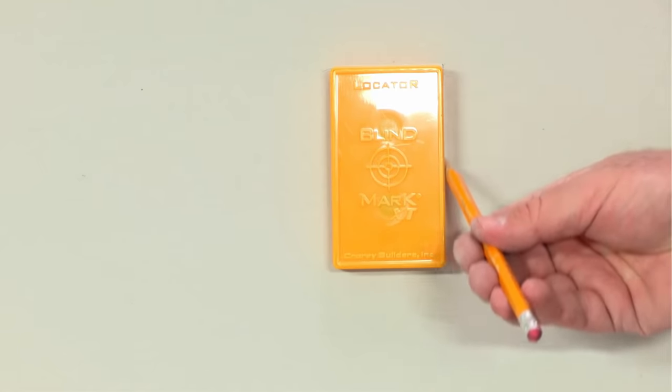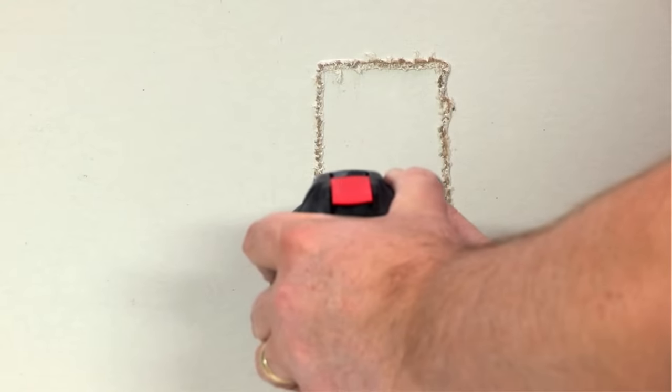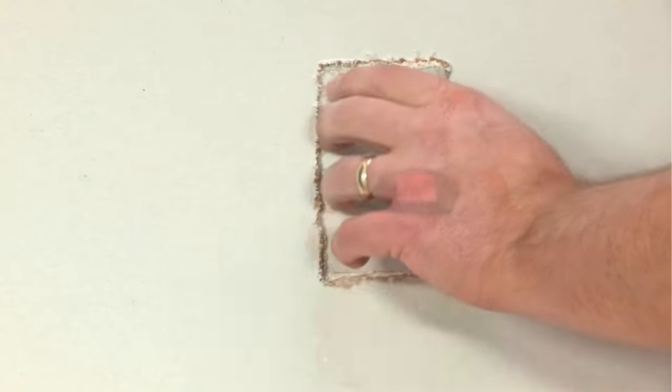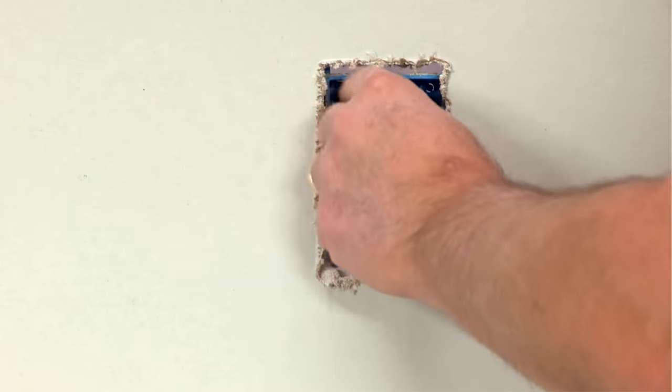Using the locator as a guide, outline the electrical box perimeter. Remove the locator magnet from the drywall. Using the outline, cut out a hole around the electrical box. Remove the material. Reach out to remove the target magnet from the electrical box and you're done!